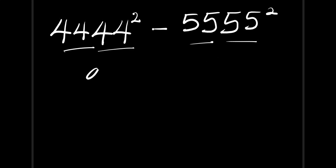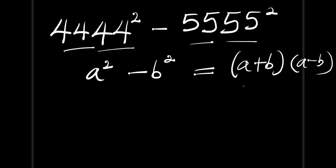This is in the form of a² - b², and this equals (a+b)(a-b). In this case, our a equals 4444.